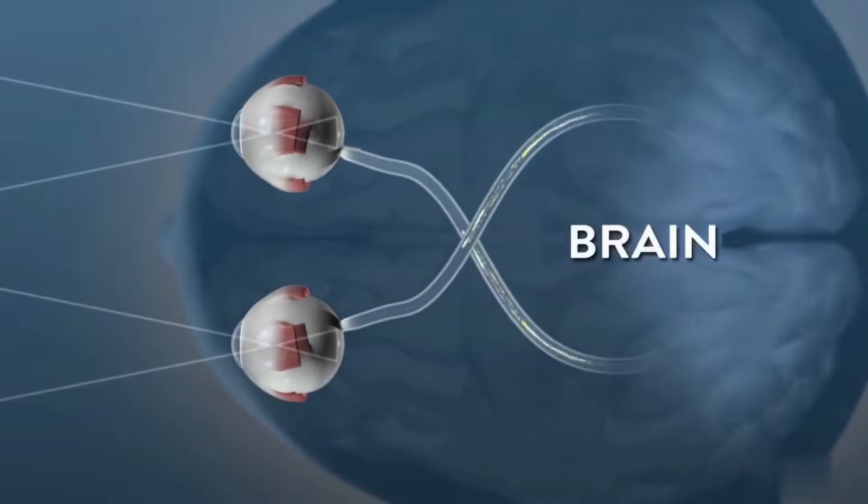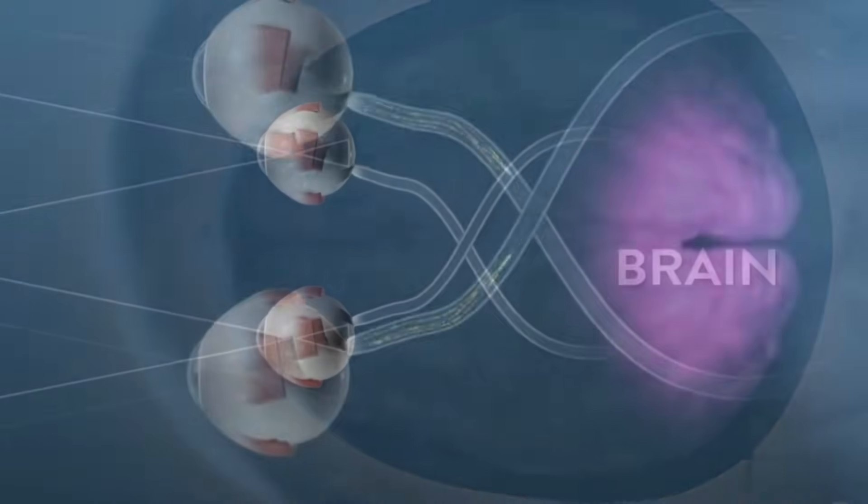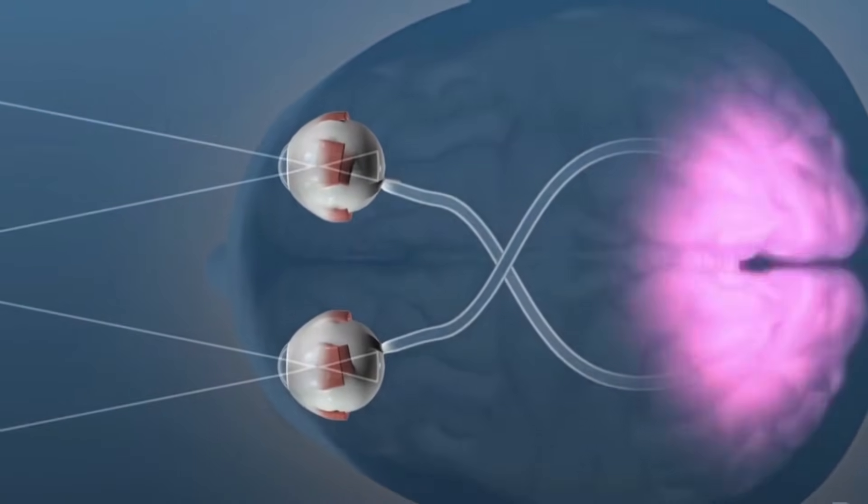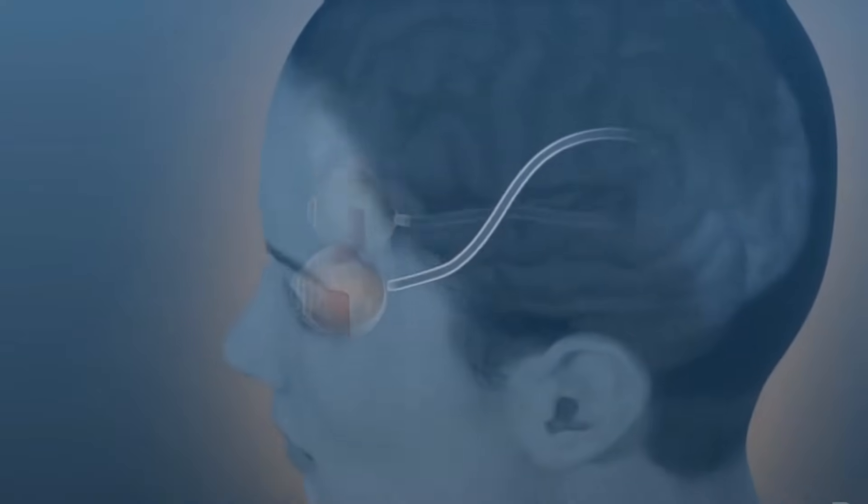These impulses then travel through the optic nerve into the primary visual cortex, which is located in the most posterior portion of the brain's occipital lobe.